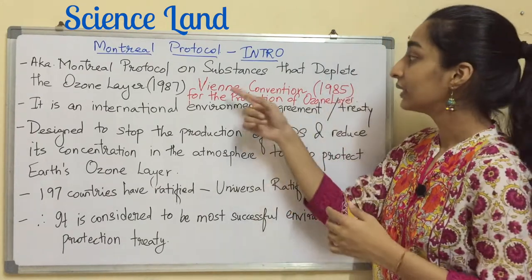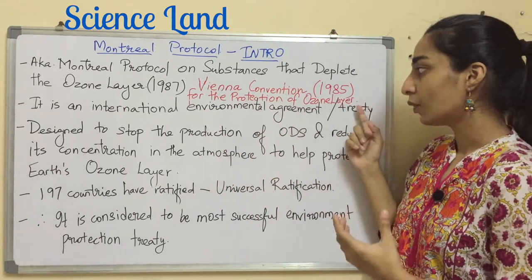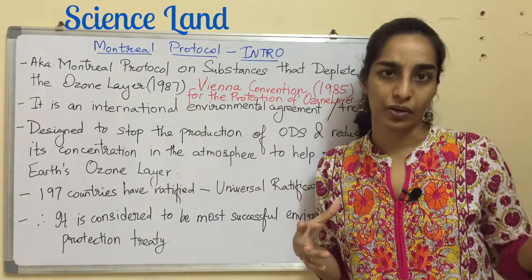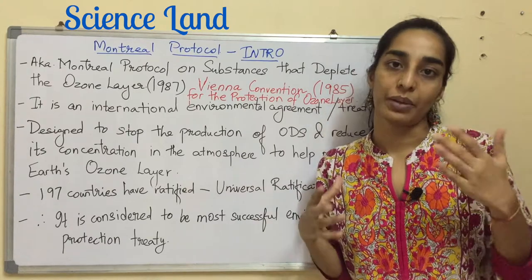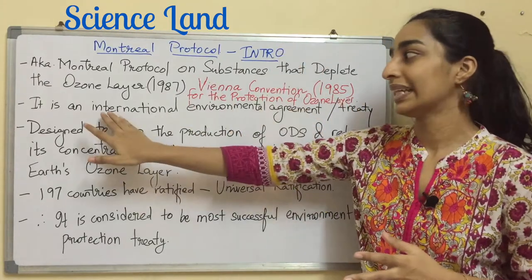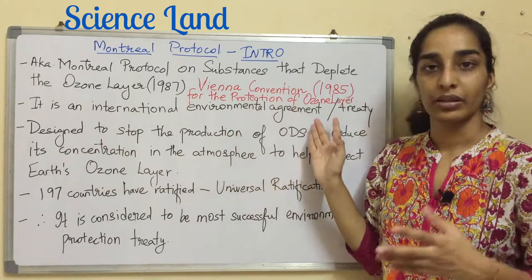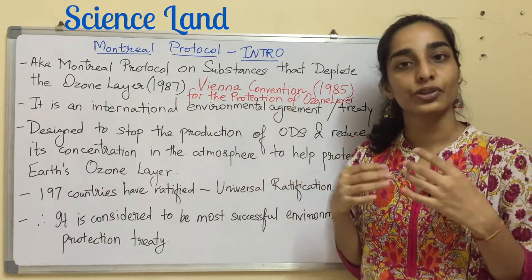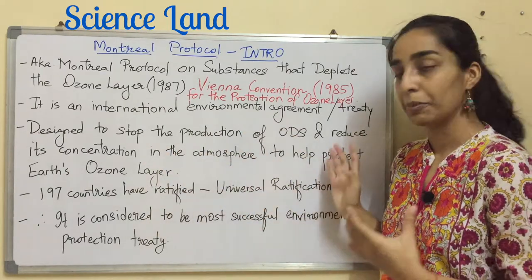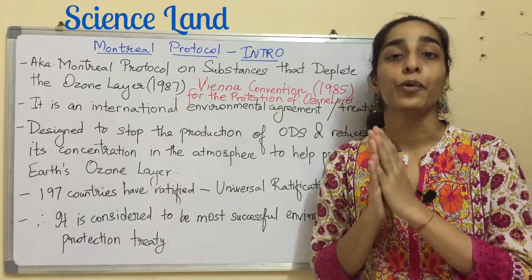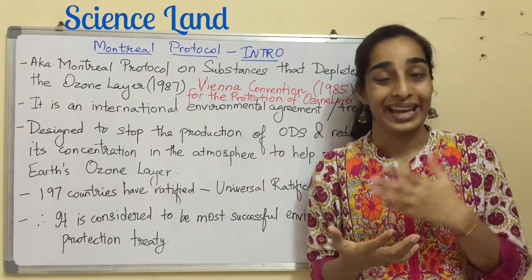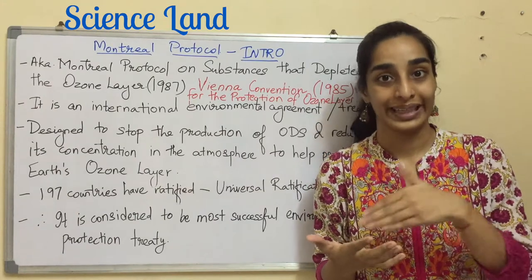Montreal Protocol is like a baby of another convention known as the Vienna Convention for the Protection of the Ozone Layer, which was signed approximately 17-18 months before Montreal Protocol, in the year 1985. Montreal Protocol is an international environmental agreement or treaty designed to stop the production of ODS and its concentration in the atmosphere to help protect the ozone layer.